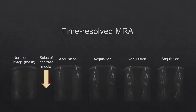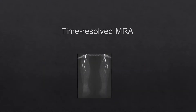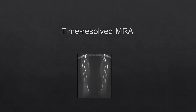Each time point can be reconstructed as a whole image, but time-resolved images are most often viewed as subtracted, thick-section maximum intensity projections. This shows the flow dynamics and allows all time points to be viewed quickly, enabling the reader to rapidly choose the best image to demonstrate anatomy or physiology as required.